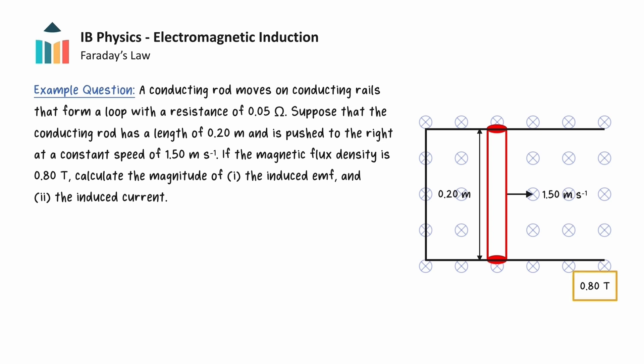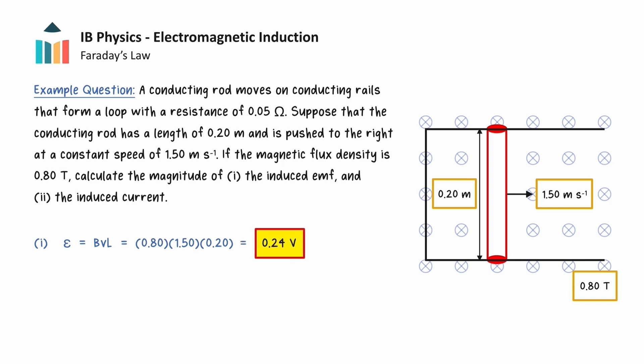The magnetic field, velocity, and length of the rod are all perpendicular to each other, so we can use the motional EMF equation to calculate the induced EMF. After making the relevant substitutions, we find that the induced EMF is equal to 0.24 volts.